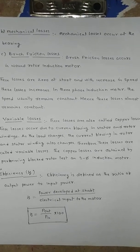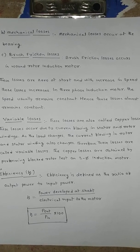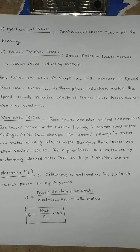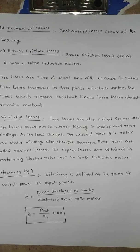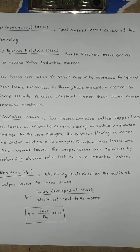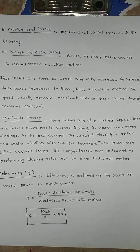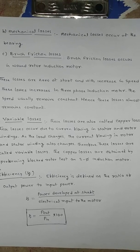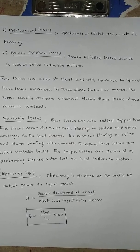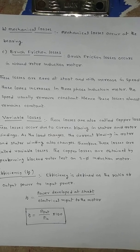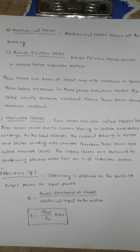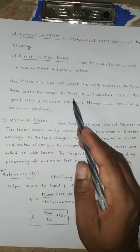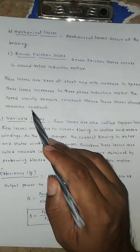Mechanical losses are rotational losses that occur at the bearings, which are used to rotate the rotor freely. If the bearings are damaged, mechanical losses increase and the motor makes noise. Brush friction losses occur due to friction from brush contact with slip rings in the case of wound rotor (slip ring) induction motors. Basically, these losses are zero at starting and increase with speed.